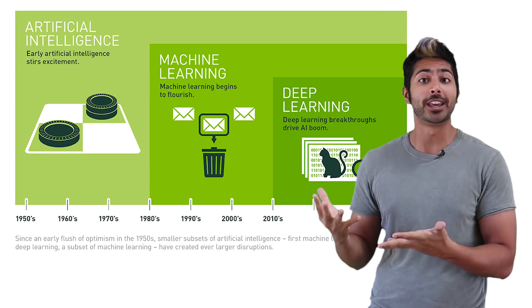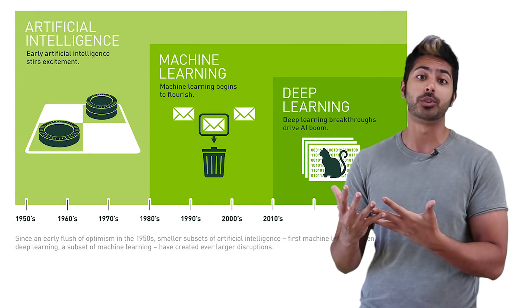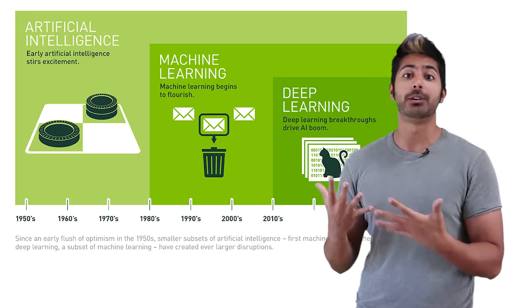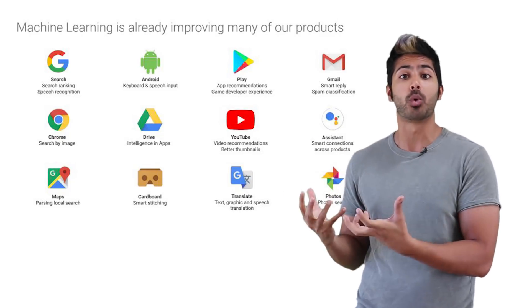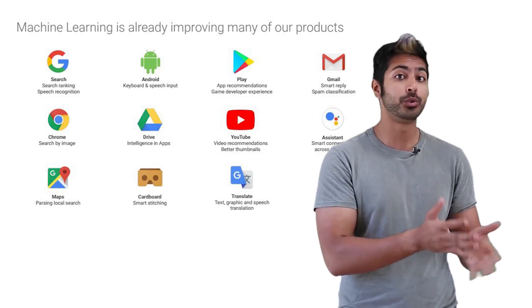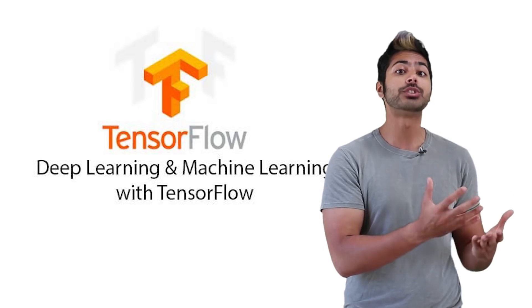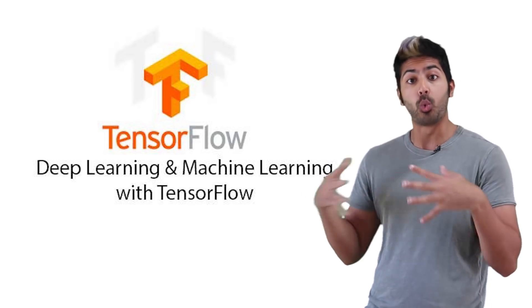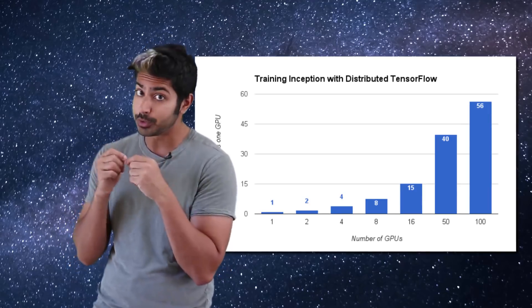A couple years ago deep learning started to outperform all other machine learning models when given massive amounts of data. Google saw that it could use these deep neural networks to improve its services from Gmail to photos to search. They built a framework called TensorFlow out of a need to let researchers and developers work together on AI models, have them scale to billions of people. Originally, it was made for internal use only.